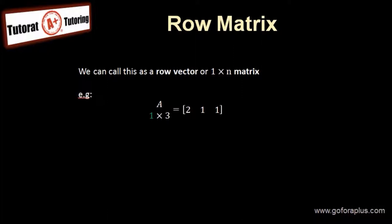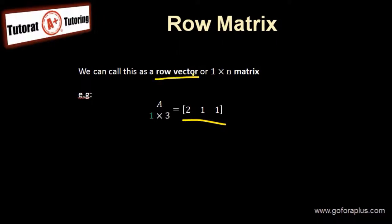So what is a row matrix? In this example, we have matrix A which is 1 by 3. 1 means there's only one row, so this is called the row matrix — but there are 3 columns. No matter how many columns you have, if you have only one row, we call this a row matrix, or we can call this a row vector.